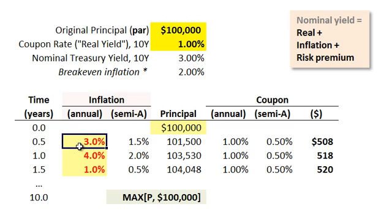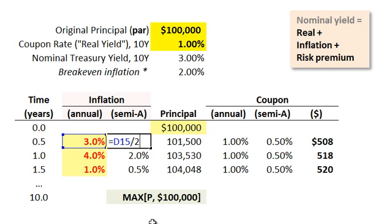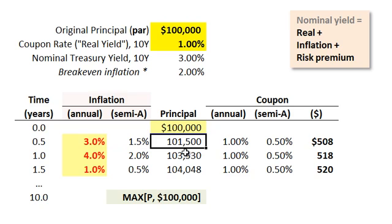Let's assume inflation comes in at 3% annualized. The coupon pays every six months, so the semi-annual equivalent is simply half of that — 1.5%. Here's the key idea with the Treasury Inflation Protected Security: the coupon is fixed. It is the principal that is adjusted. So what we end up with in this column is what's called inflation-adjusted principal.